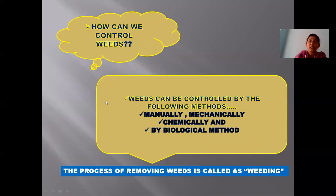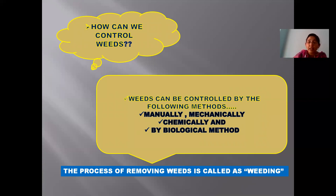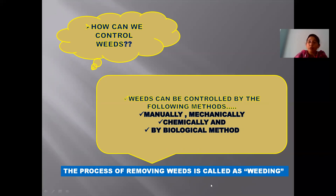Weeds must be controlled. How can we control the weeds? Weeds are controlled by different methods. One is manually — we can pluck them out with our hands. Second is mechanically — we can use some tools to remove those weeds. Chemically, we use chemicals; in your eighth standard, you have learned about 2,4-D, a chemical called herbicide which kills dicot weeds. And also by biological methods — some insects feed on these plants. The process of removing weeds is called weeding. Weeds must be removed, otherwise our yield decreases.